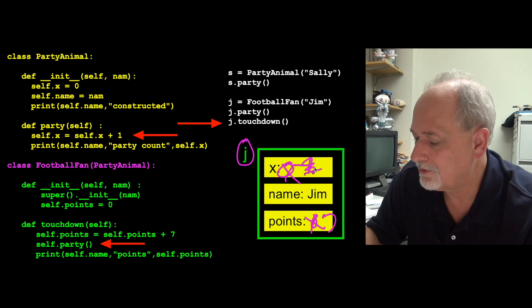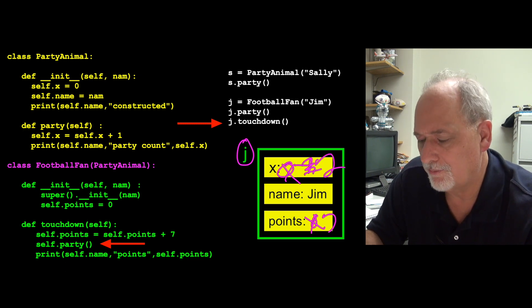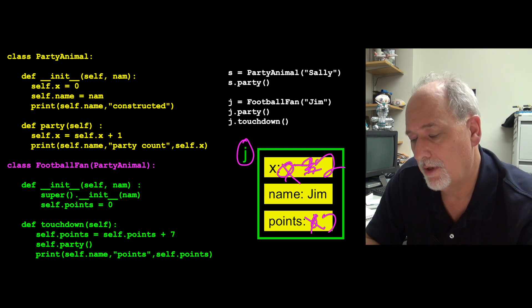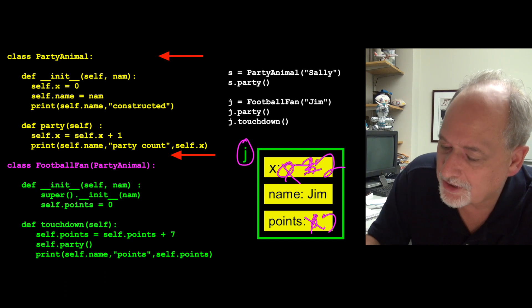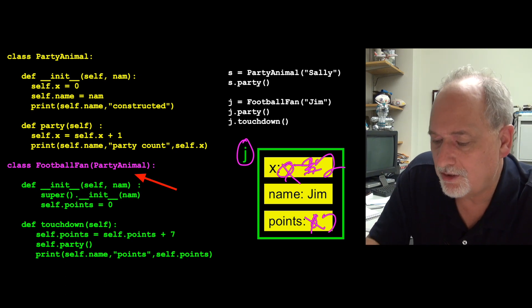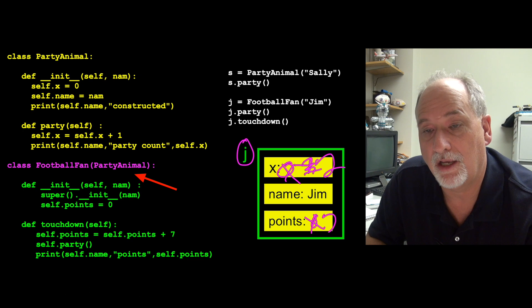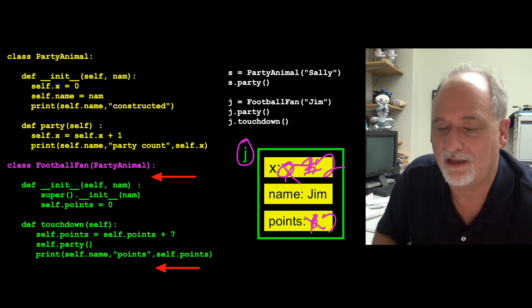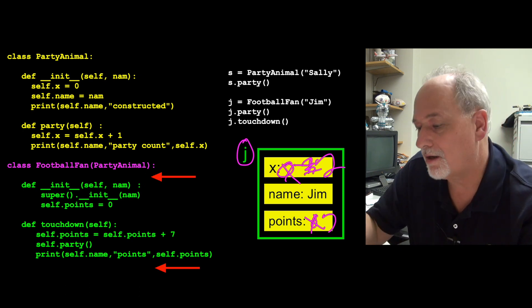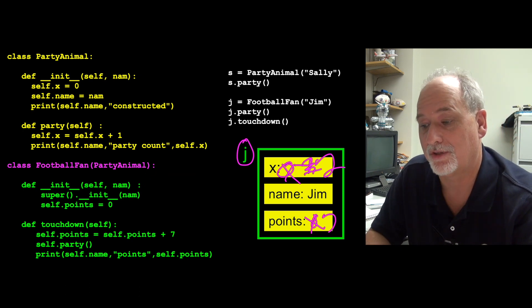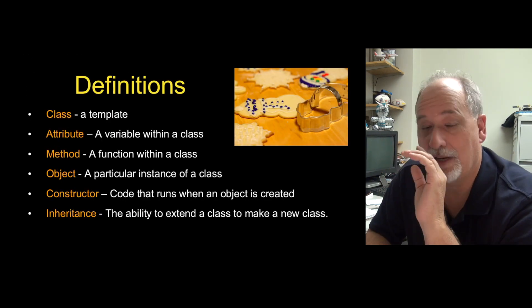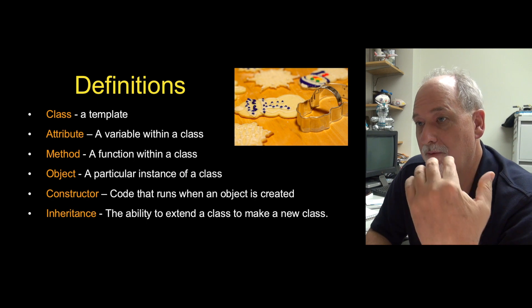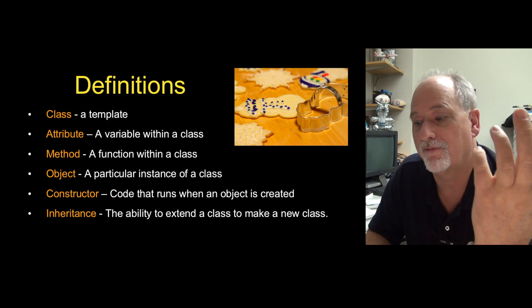So x becomes two, and it prints out seven and two. It's a way to take all that existing functionality and pack it into a new class by just adding the extending bits — the parts that are in addition to the other stuff. Inheritance is a powerful and wonderful concept, and an excellent form of reuse.